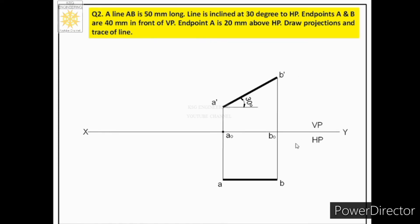First, extend the front view by aligning the scale with the line and extending it so it intersects the reference line XY at some point. This extension line should be continuous thin with a 1 mm gap maintained, and the intersection point is made bold and called small letter H dash. Then extend the top view — its extension will be parallel to the reference line, also continuous thin with a 1 mm gap. From point H dash draw a perpendicular onto this extension. The intersection obtained is made bold and called the horizontal trace HT.